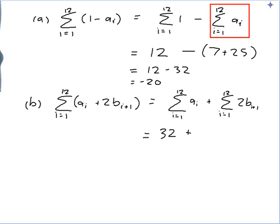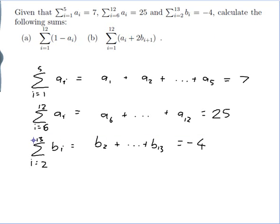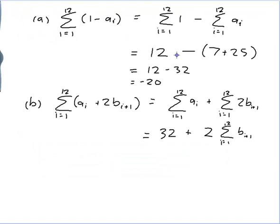And I've already figured out what the sum from 1 to 12 of ai is. It was 32 from above. And I reckon I need to use another rule here. I have the sum of just b's, so if I could just very sneakily get this 2 and move it out the front, that would solve the problem of having a 2 in there. And I am allowed to do such things. So 2 times the sum from i equals 1 to 12 of bi plus 1. Now let's just look back at the information I've got. I have the sum from 2 to 13 of bi.